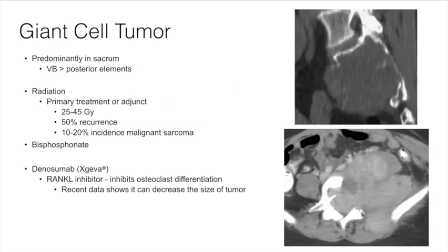Giant cell tumors are predominantly found in the sacrum and tend to be more asymmetric — which differs from chordomas, which are more midline. With the advent of denosumab (Xgeva), which inhibits osteoclast differentiation, tumor size can be decreased. In combination with bisphosphonates and embolization, this can serve as primary treatment for tumors in difficult locations to resect or reconstruct surgically.